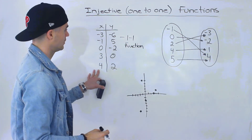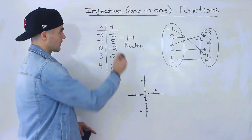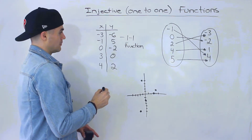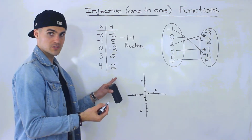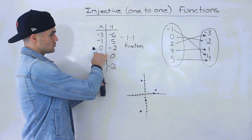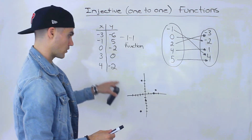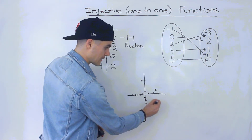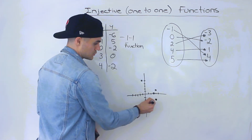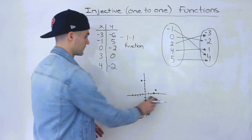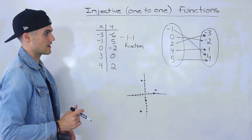If instead that last y-value were negative two instead of positive two, it would not be a one-to-one function — because for the single y-value of negative two, we'd have two corresponding x-values: zero and four. On the graph, the point (4, -2) would line up with (0, -2) and fail the horizontal line test, with two x-values for a single y-value. But since it was positive two, it passes — so it's one-to-one.